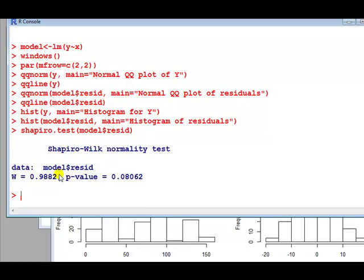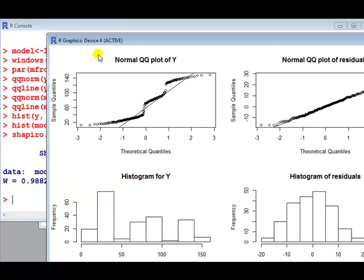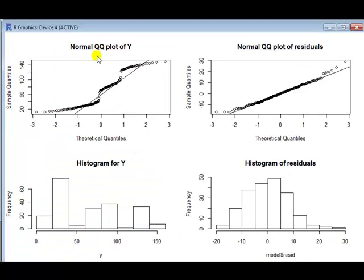Yep, so running on the residuals, the null hypothesis is that the errors are normally distributed. The p-value is 0.08, bigger than 0.05, so evidence not to reject the null of normality of errors. Well that is the assumption, classical assumption of regression, or should I say assumption of classical regression.